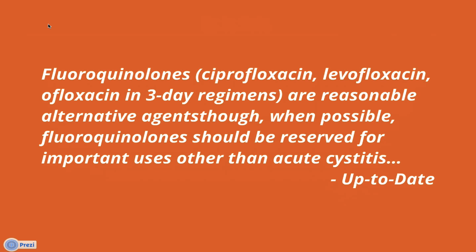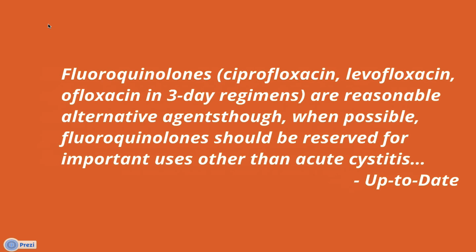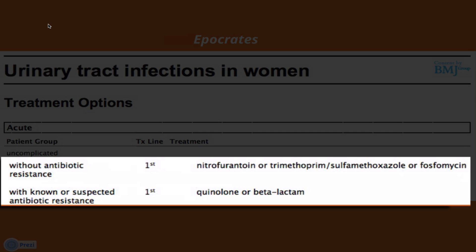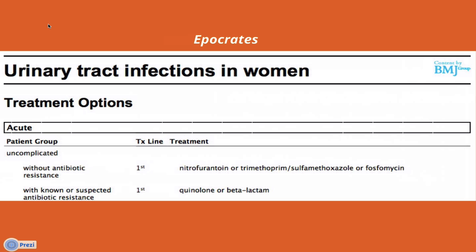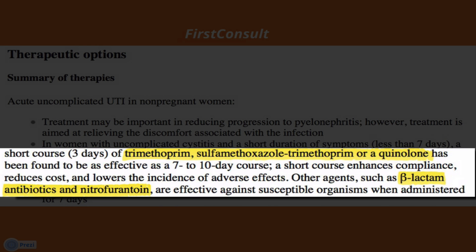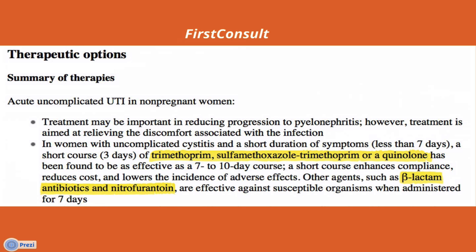Fluoroquinolones can also be used as alternatives according to UpToDate, but it's best to use them for uses besides acute cystitis. If we check Hippocrates, you'll see the same antibiotics are recommended. They recommend fluoroquinolones when there is suspected or known antibiotic resistance. First Consult basically verifies that the medications we've mentioned so far are the most commonly used.